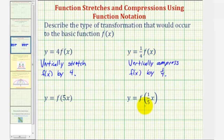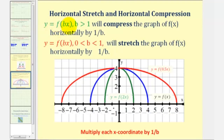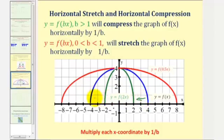Now for these next two examples, let's consider y equals f of bx. Again, notice first in blue we have the graph of the basic function y equals f of x. Now let's consider when b is greater than one — let's say b equals two. Notice the graph of y equals f of two x is actually horizontally compressed. Notice along the x axis the parent function goes from negative four to positive four, but f of two x only goes from negative two to positive two. So it's actually half as wide as the parent function.